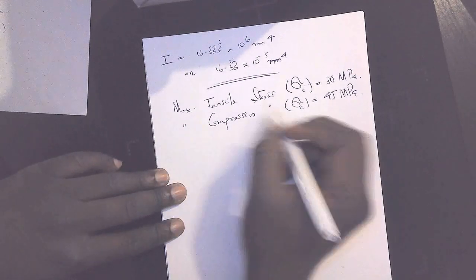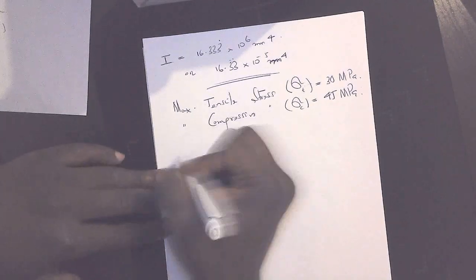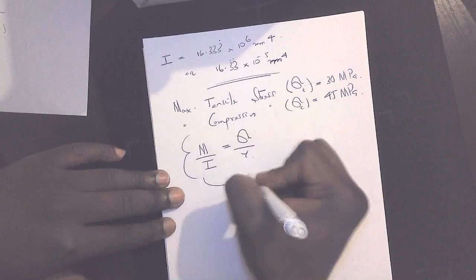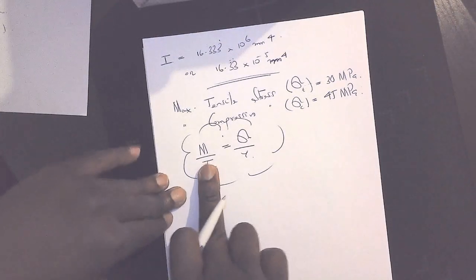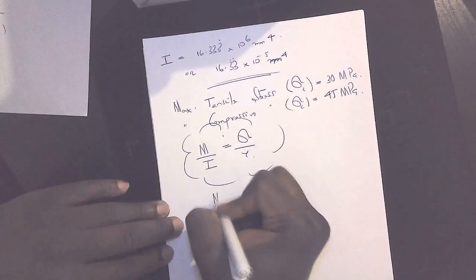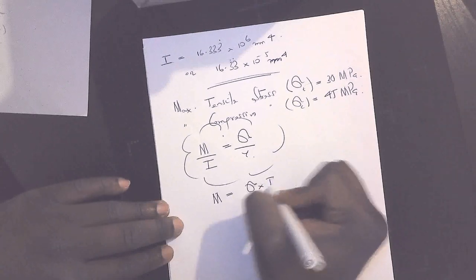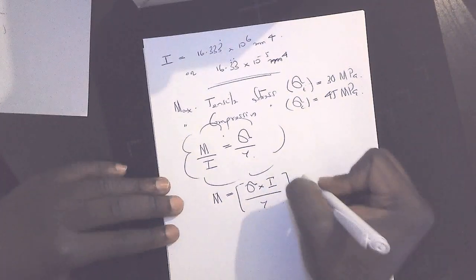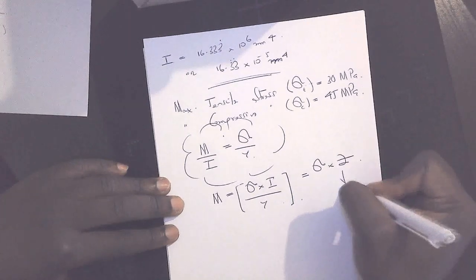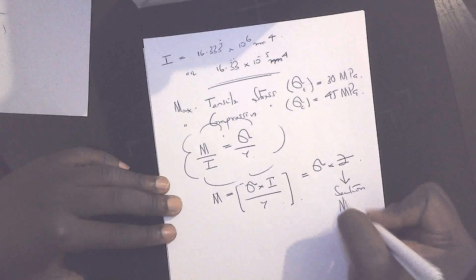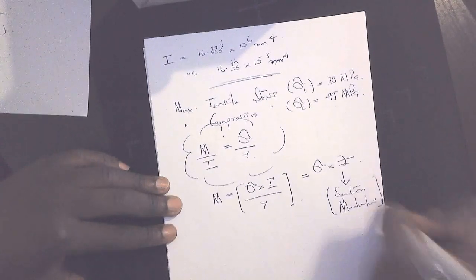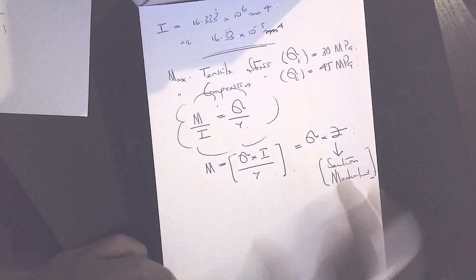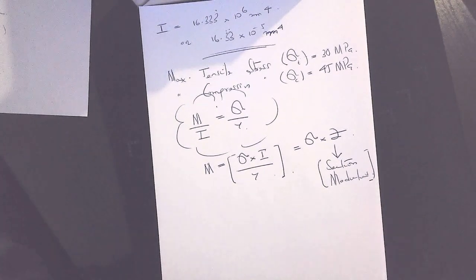So how do we calculate for the bending moment? Going back to the flexural formula, M over I is equal to sigma over Y. We make M the subject of this relationship, and M will be equal to the product of sigma and I divided by Y, which is similar to sigma times Z, and Z is a property known as the section modulus. That's basically the ratio of I to Y.